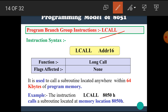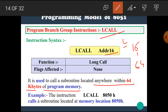First, LCALL. Its syntax is LCALL address16, meaning it requires a 16-bit address. LCALL is used to call a subroutine located anywhere within 64 KB of program memory. Whenever the long call is used, it requires a 16-bit address and its range is 64 KB. For example, LCALL 8050H calls the subroutine located at memory location 8050H.